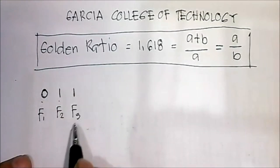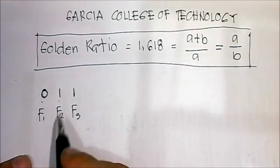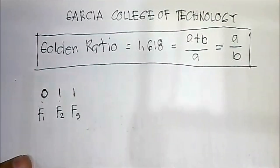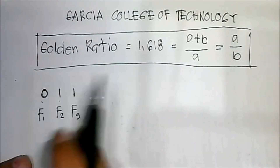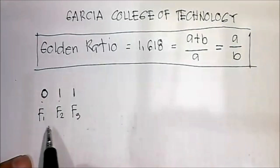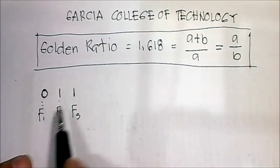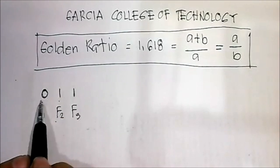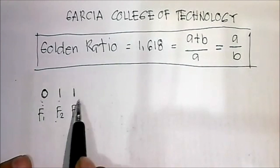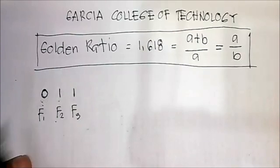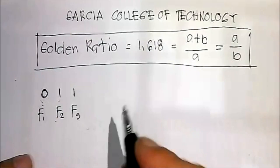To solve for Fibonacci number 3, we simply add the two previous numbers in the given sequence. The two previous numbers are 0 and 1, so 0 plus 1 equals 1.